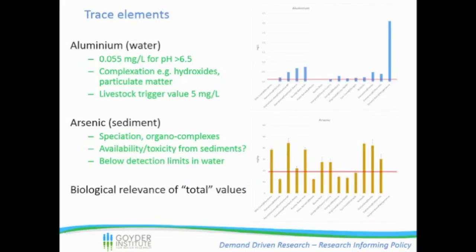In terms of trace elements, we didn't see too many in waterways. Aluminium was a notable exception, and at a lot of sites it did exceed the red line trigger value at 0.055 milligrams per litre. Now, aluminium's a bit of a tricky element - it's only toxic when it's in its free form, but it's often found in the environment as complexes with hydroxides or particulate matter. So we were measuring the total aluminium value, but we weren't able to separate whether it was potentially dangerous. So even though it exceeded guideline values, this is really telling you where you need to dig a little bit deeper to see what form the aluminium was in. We saw the same thing with arsenic in sediments - even though a lot of the sites' guideline values were exceeded, arsenic is in many different forms in the environment and the main question is whether it's available or toxic in the sediment. One finding was that it was below detection limit in all our water samples, which might go some way to answering that question.